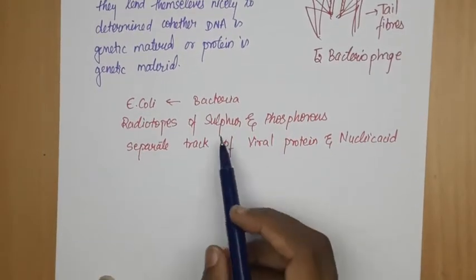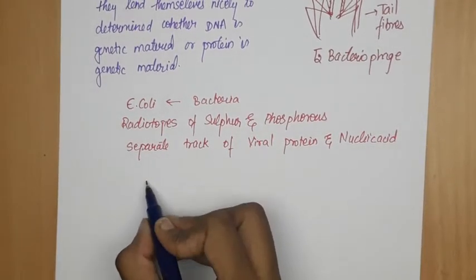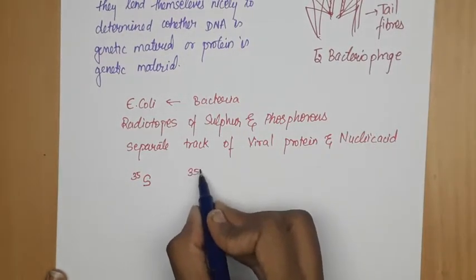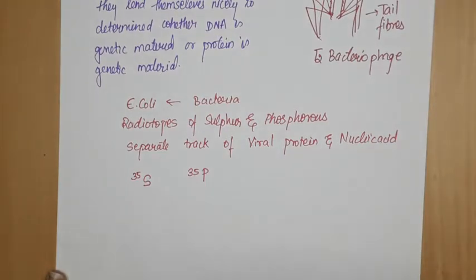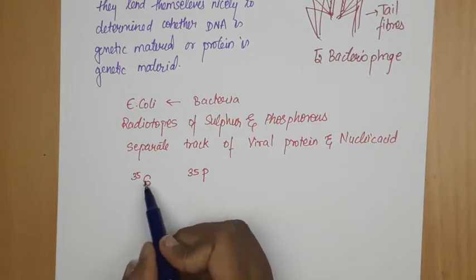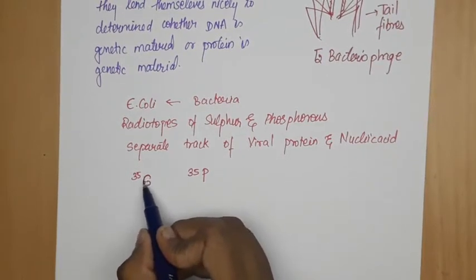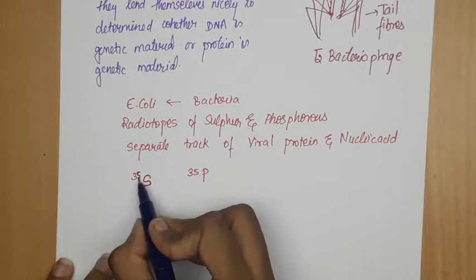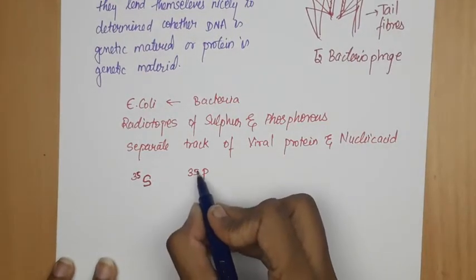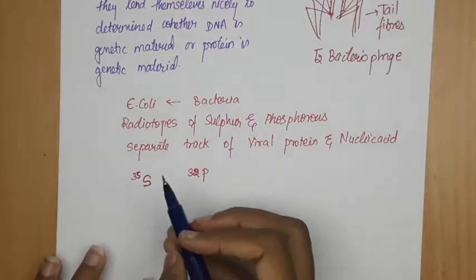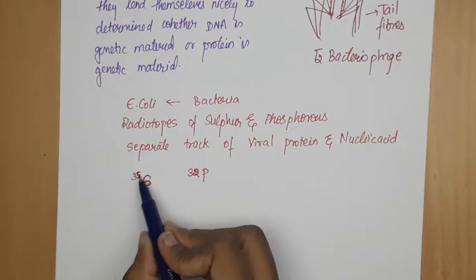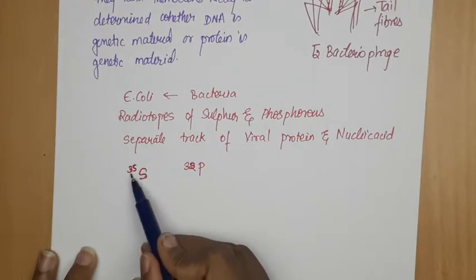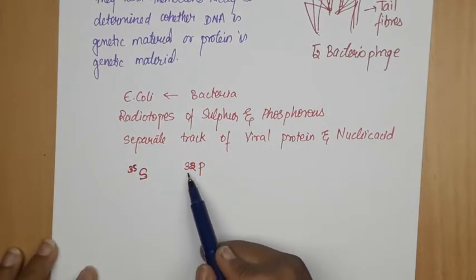Now they labeled this radioisotope of sulfur. They used radioisotope sulfur S-35, and for phosphorus they used P-32. How will you remember? S means sulfur — the number 5 in 35 looks like an S, so S-35. And for phosphorus they used P-32.